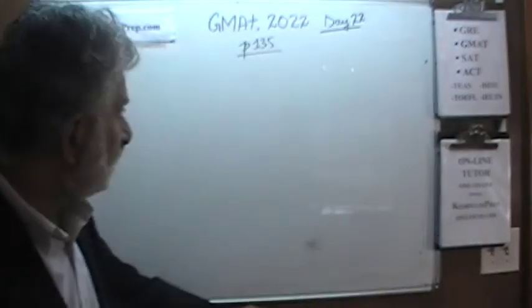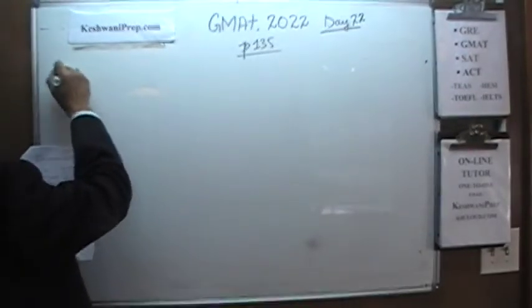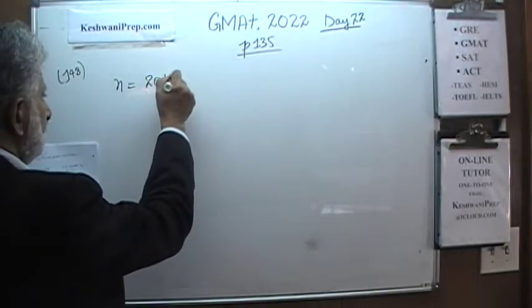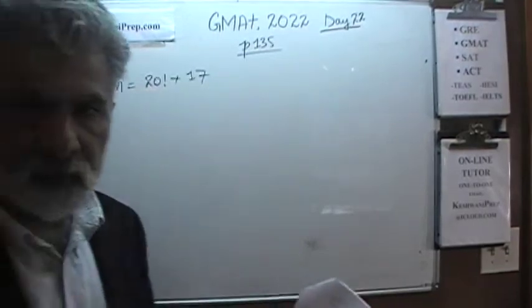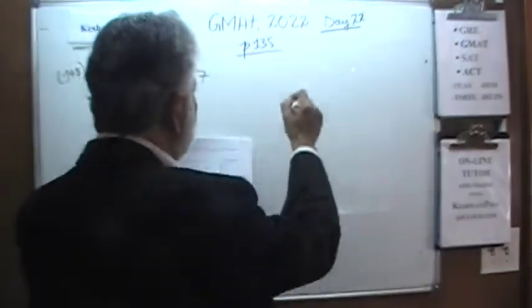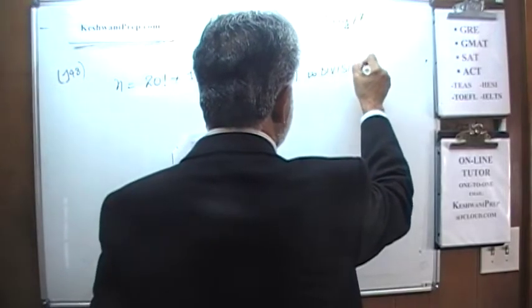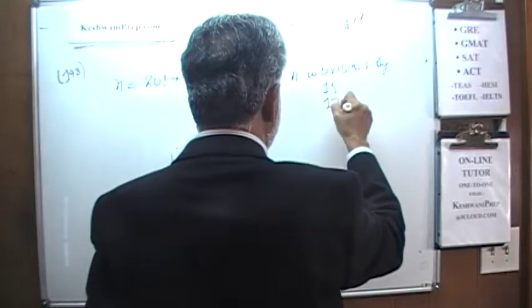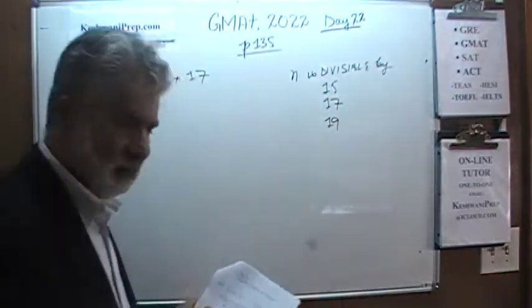The very first problem on page 135 is number 148. Number 148 says that n is equal to 20 factorial plus 17. Given that n equals 20 factorial plus 17, the question is: n is divisible by which of these three numbers — 15, 17, or 19?